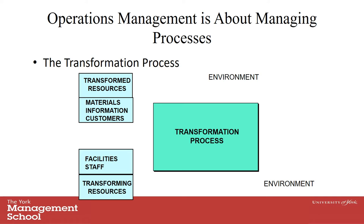Transforming resources include machinery, computers, mechanics — the actual physical items we use to take the materials, the information, and the customers, and combine them to produce the outputs. We put these through a transformation process.